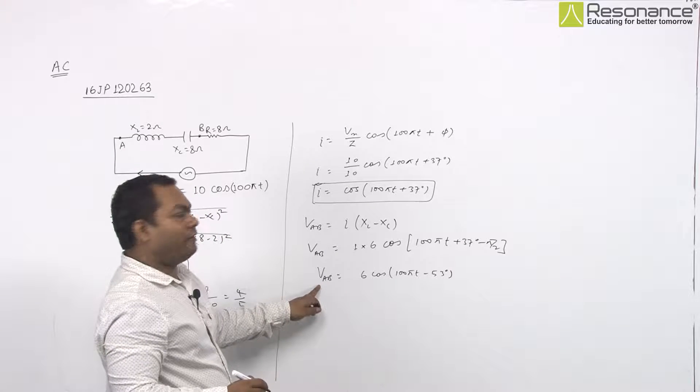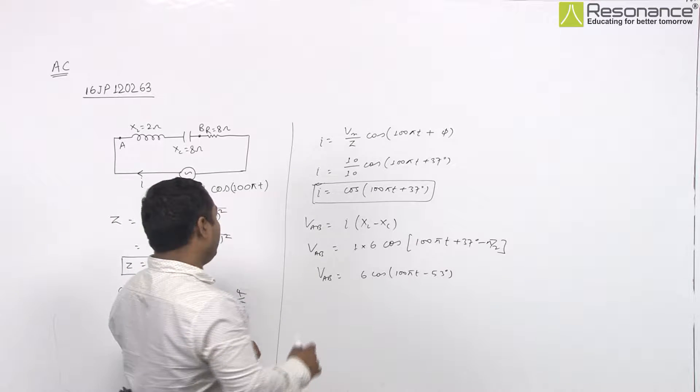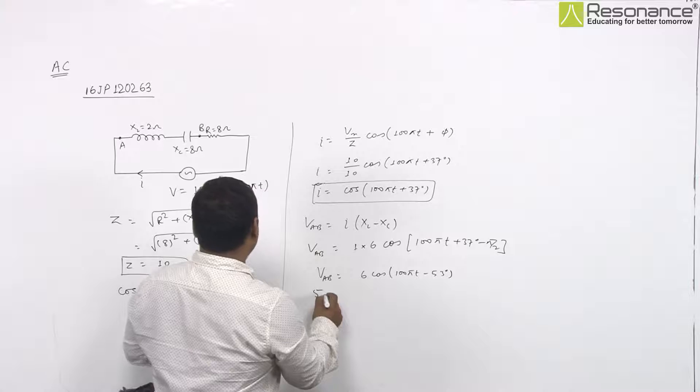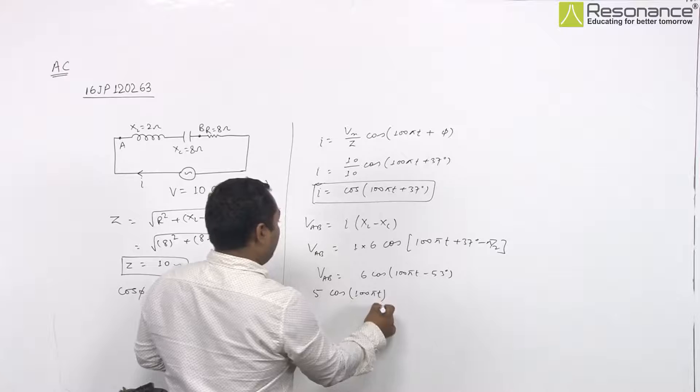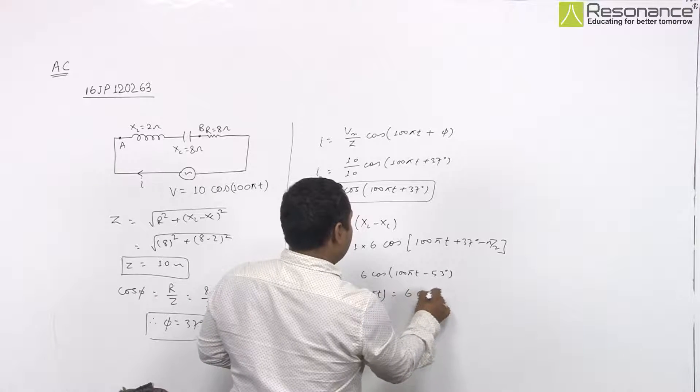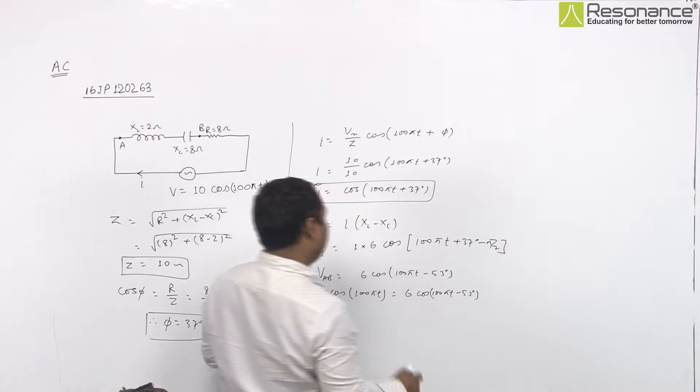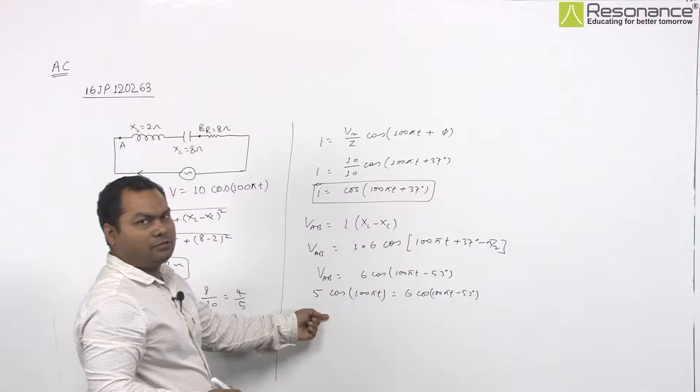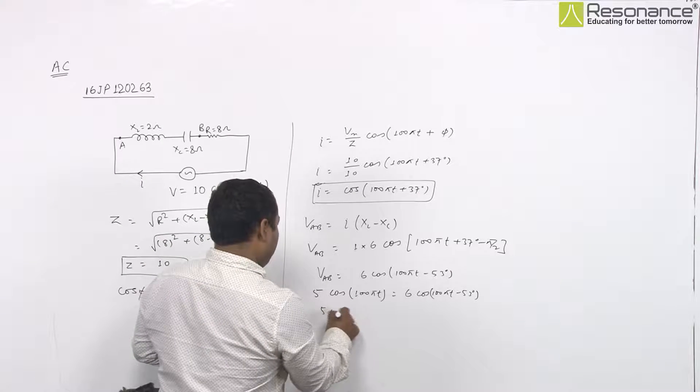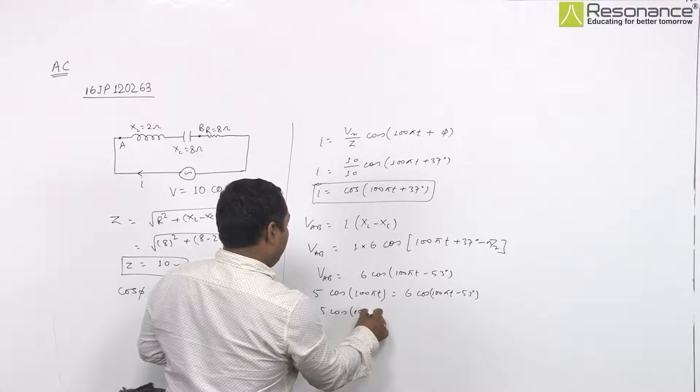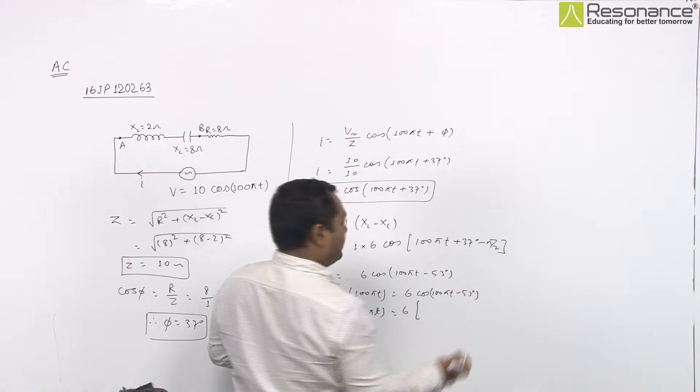Now, you see, it is given that VAB is half of this value, so we will put simply half of this value that is 5 cos of 100 pi T equals 6 cos of 100 pi T minus 53 degree. We will have to solve this value.